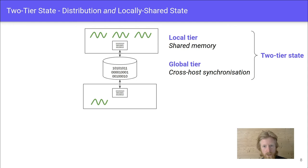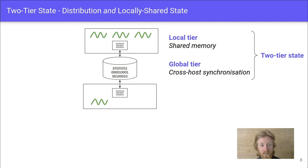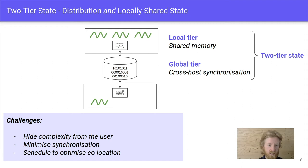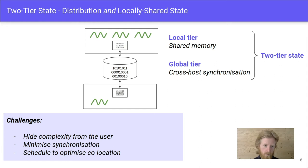Once we've efficiently shared state on a single host, we need to scale it up by distributing things across hosts. To do this, we introduce a two-tier state model. The first tier is a local tier where things can share memory, and the second is a global tier backed by external storage which lets us synchronize copies of state across hosts. This is a good start, but we have further challenges: hiding this new complexity from the user, minimizing synchronization overheads, and optimizing our scheduler to put lots of functions on the same host to reduce duplication wherever possible.